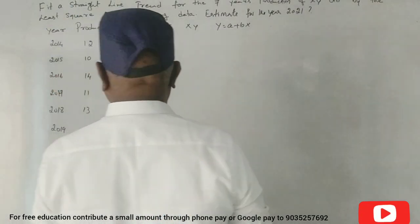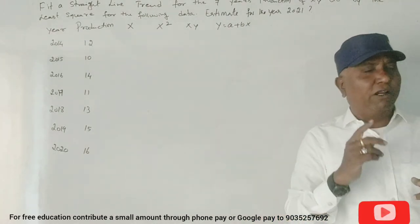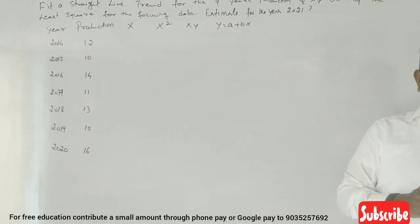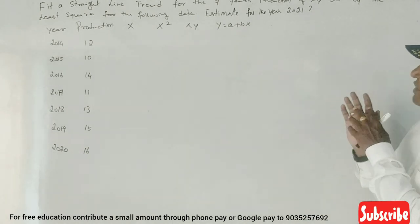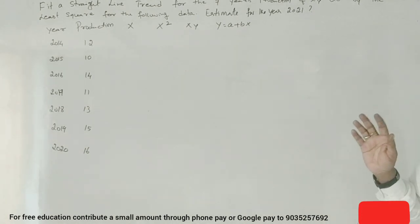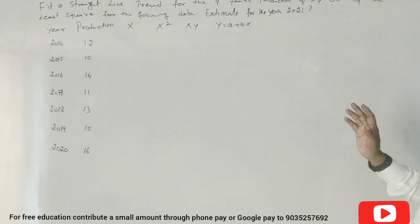So, 2020 modern print. Fit a straight line trend for the seven years production of XY Limited by least square method from the following data, estimate for the year 2021.